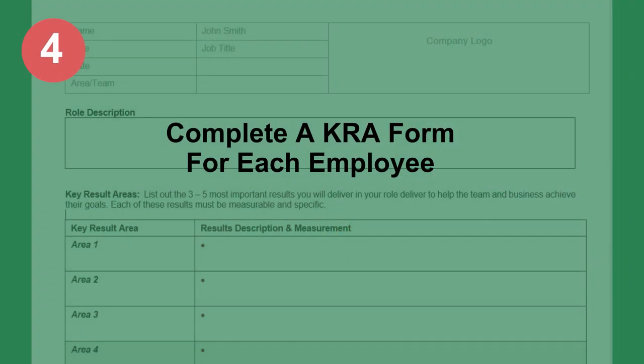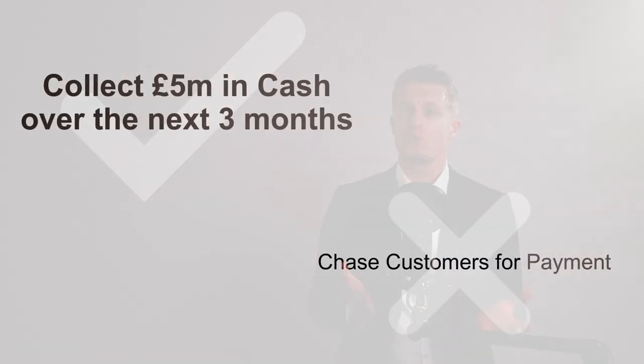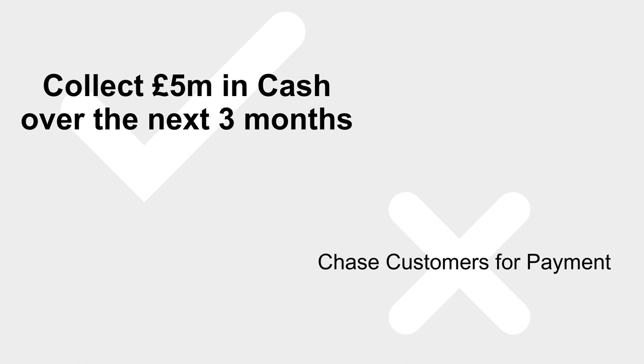Fourth, on one page, write the KRAs for each employee. The format should be their name, their title, then a short description of their role, and then up to five KRAs. These need to be results-oriented rather than focused on activity. A couple of sentences for each, outlining exactly what the result is and how it will be measured is perfect. For example, collecting five million pounds in cash over three months is a result — chasing customers for payment is an activity. Don't share your version of the employee's KRAs with the employee yet.